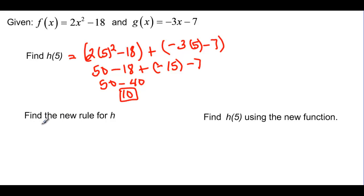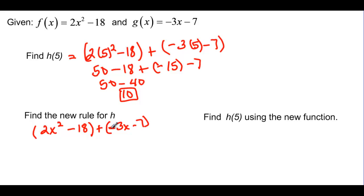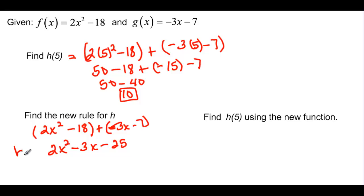Now it says find a new rule for h. Going back to function notation: 2x squared minus 18 plus negative 3x minus 7. I'm just going to combine like terms. So 2x squared is the only x squared term, and my x term from the g function is minus 3x because I'm adding. Then negative 18 and negative 7 gives us minus 25. So h of x equals 2x squared minus 3x minus 25.